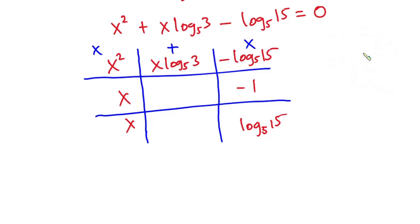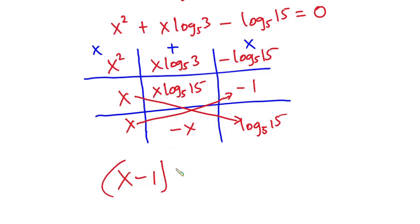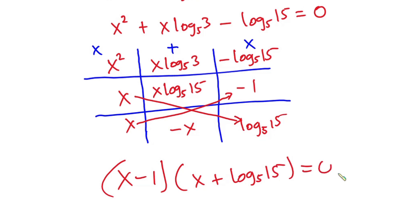Now for the middle boxes: multiplying x by log base 5 of 15 gives x·log₅(15), and multiplying x by negative 1 gives negative x. Adding those two middle terms gives x·log₅(15) minus x, which matches our middle term x·log₅(3). So the factors are (x minus 1) and (x plus log base 5 of 15), and the equation equals zero.